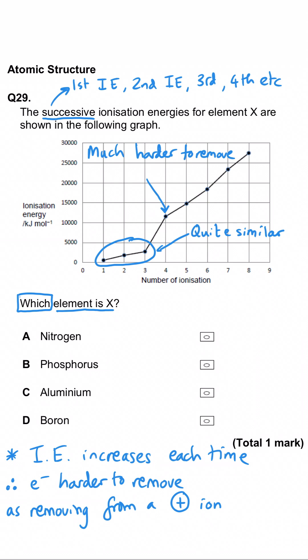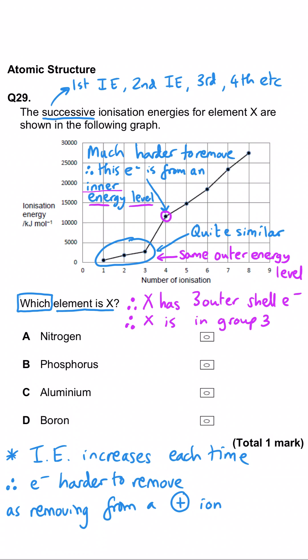What that means is that the first three electrons are in the same energy level but the fourth is from an inner energy level and so therefore we've got three electrons in our outer energy level and so this element has to be in group three. So we can rule out A and B because nitrogen and phosphorus are in group five. We can rule out D because boron has actually only got five electrons so it can't have an eighth ionization energy so aluminium must be the correct answer.